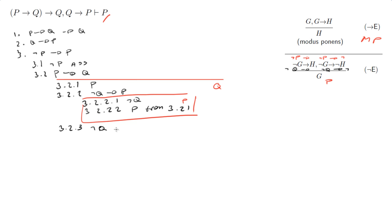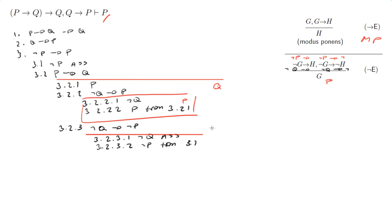Line 3.2.3: not Q implies not P. So 3.2.3.1: not Q, because it's assumption — that's easy. Then 3.2.3.2: not P from 3.1. Then I'm done with this and I can close it.